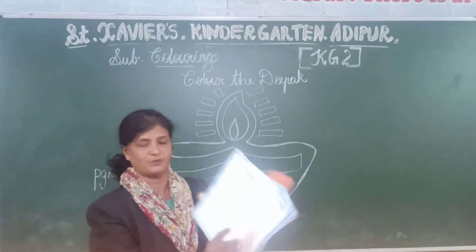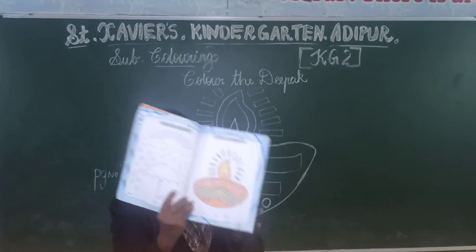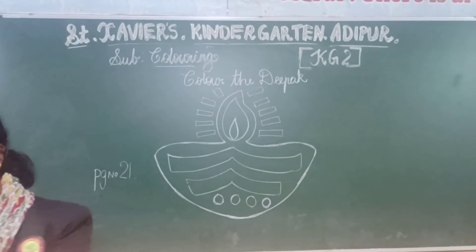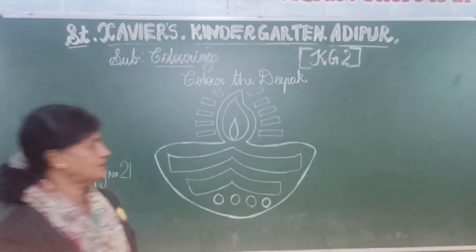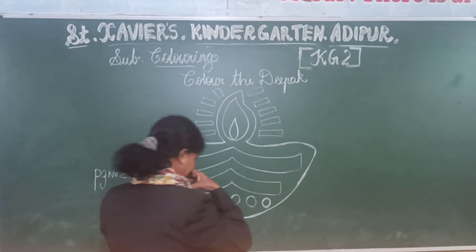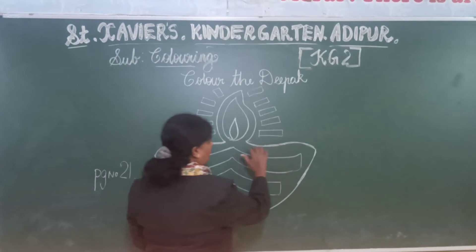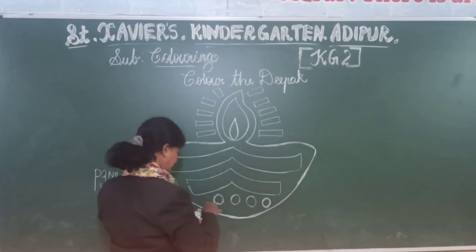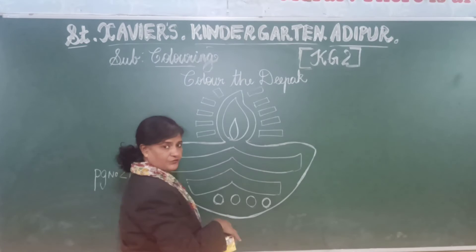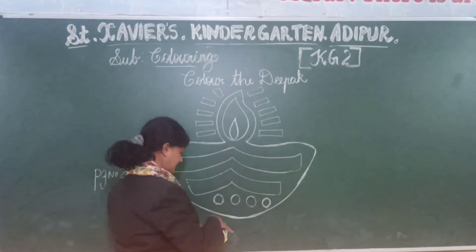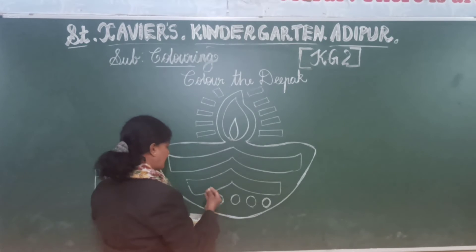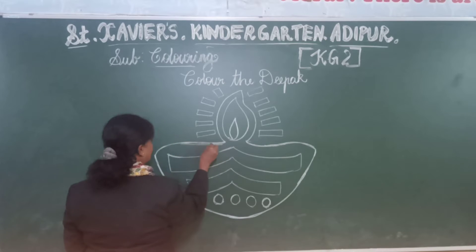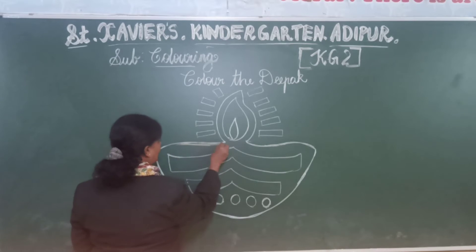We are going to page number 21. We will colour the Deepak. Okay, so are you ready? Now for the pot, we will take brown colour, or any colour of your choice. First we will start with the outline.